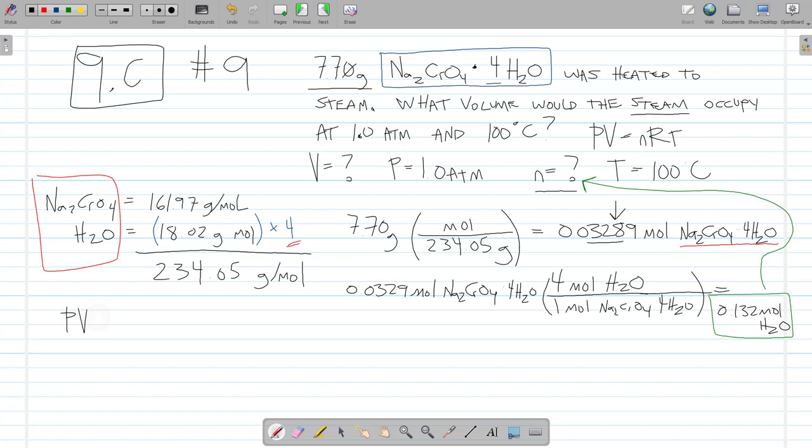PV equals nRT. I'm solving for V, so I divide both sides by P. N, I have 0.132 moles. R, gas constant, 0.0821 liter atmosphere per mole K.